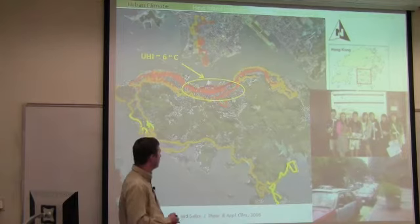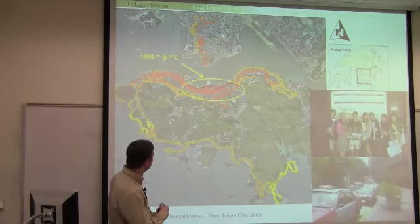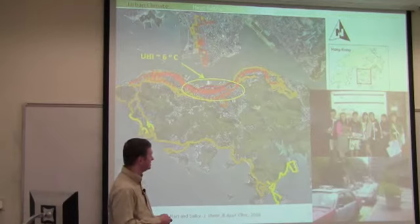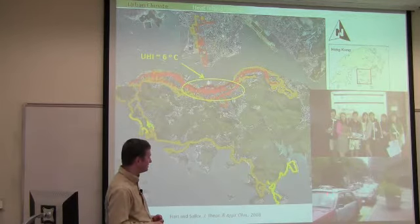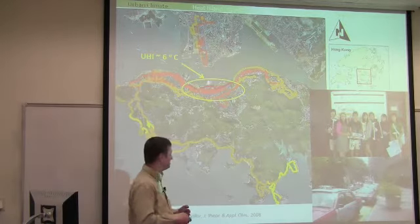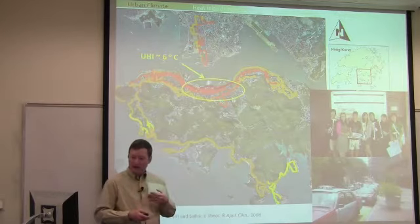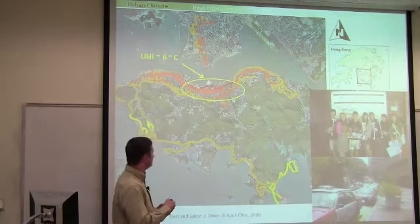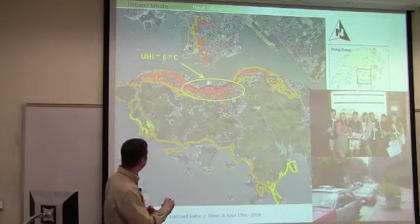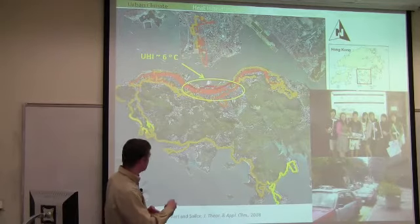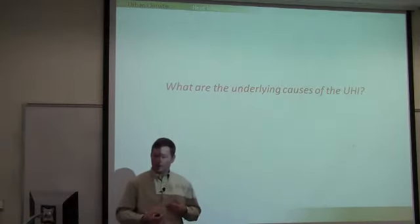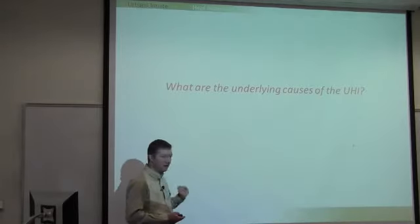One strategy for measuring the air temperature heat island is mobile traverses. This is a plot of mobile traverse data we did for Hong Kong, where I collaborated with a former post-doc who was then a professor at the University of Hong Kong. We instrumented six taxis and drove them across the city, using a system that automatically data-logs location, temperature, and humidity, getting a good representation of the urban heat island effect across Hong Kong within the urban canyon space where people are exposed.